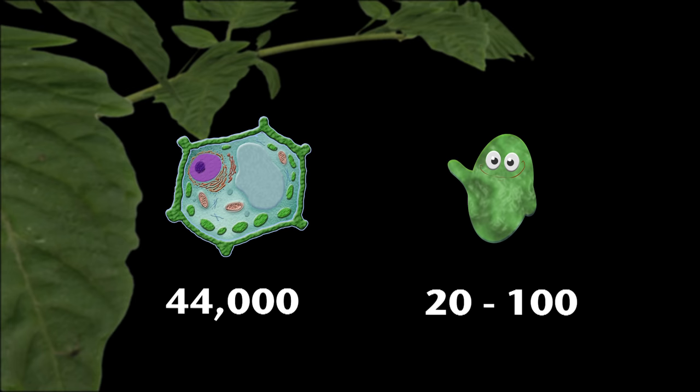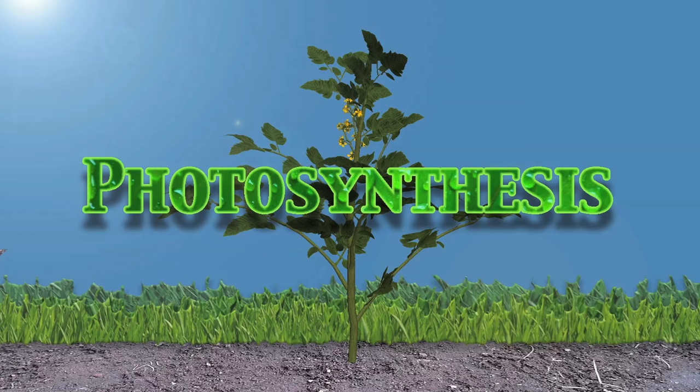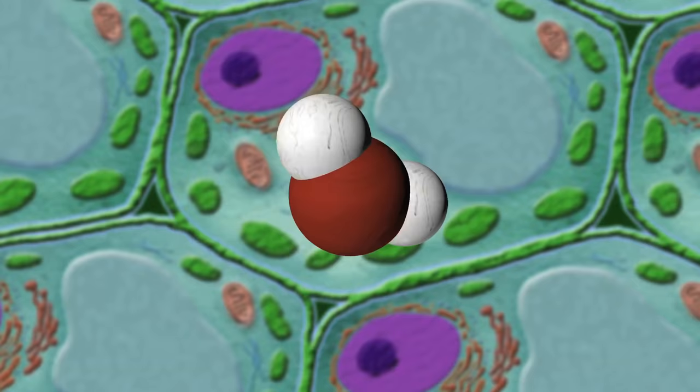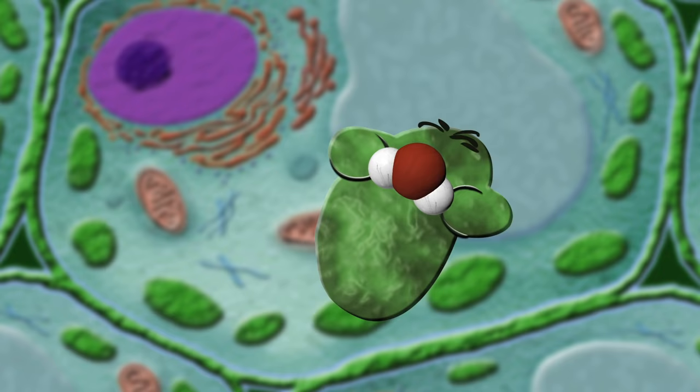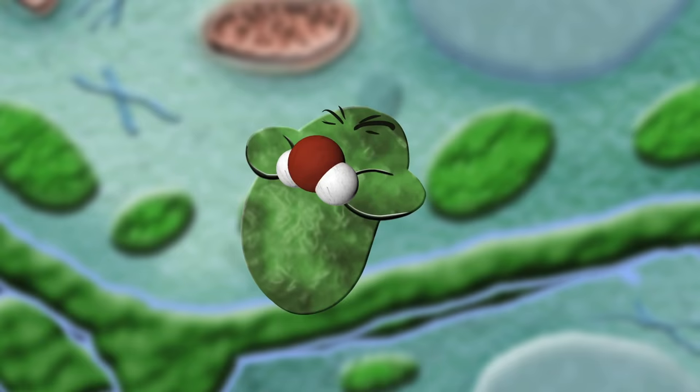That's up to 4,400,000 chloroplasts. By now, you've probably guessed that we're talking about the process of photosynthesis. Let's go back to that original molecule of water. The plant has to split this molecule of water so that it can get electrons from it, but the plant can't pull that water apart by itself — it needs help from the high energy rays of the sun.